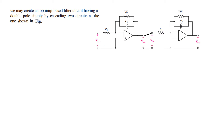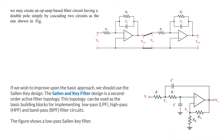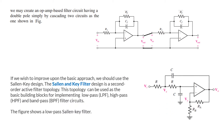Our aim is to get a double pole circuit, and this can be done by cascading two single-pole op-amp amplifiers, but this is obviously not the best choice. Here is a better choice. If you wish to improve upon the basic approach, we should use the Sallen-Key design. So this is a Sallen-Key filter.